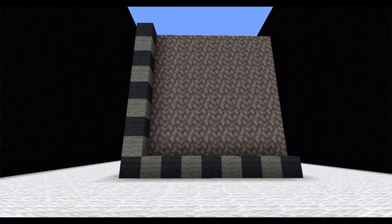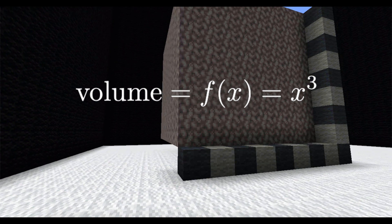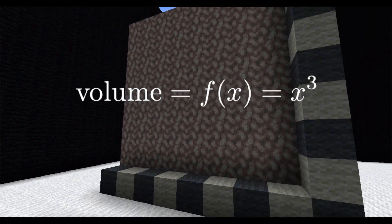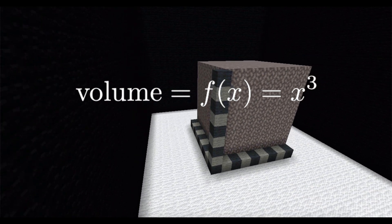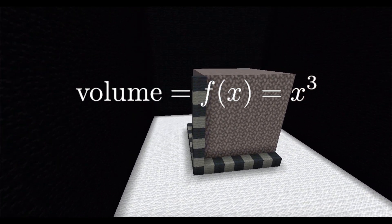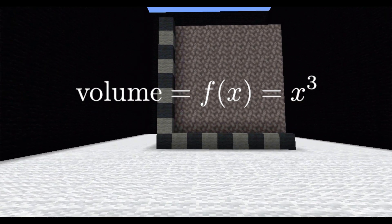Here I have a cube with side length x, and here x is equal to 8. So the volume of this cube is x to the third. So here's a way to visualize the function f of x equals x to the third. It's the volume of a cube with length x.